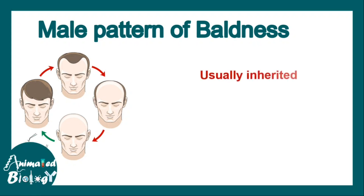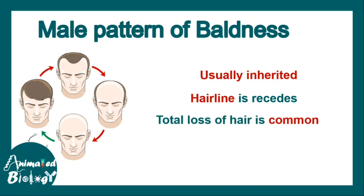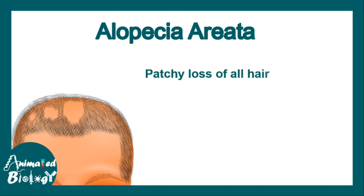Male pattern baldness is another type — an inherited condition where the hairline recedes, meaning the hairline over the forehead goes back, and finally total loss of hair is common.